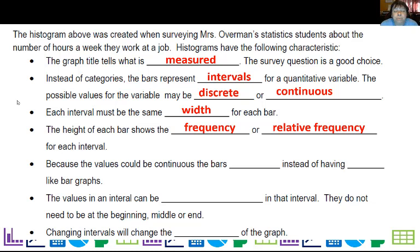Because the values could be continuous, the bars touch instead of having gaps. And the values in an interval can be anywhere in that interval. So if you see a bar spanning from zero to five, that doesn't mean all the values are two and a half or that they're three. They could be any value from zero up until just before five. And then changing intervals, if you do that, it will change the shape of the graph.